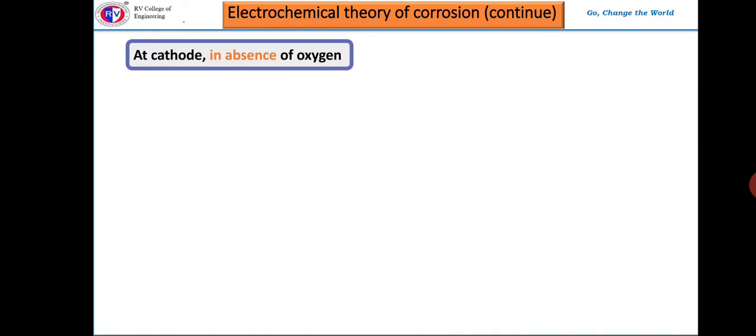The environment to which the metal is exposed can be acidic or alkaline or neutral, and it may or may not contain oxygen. Depending upon the type of environment, electrons are absorbed by different mechanisms.